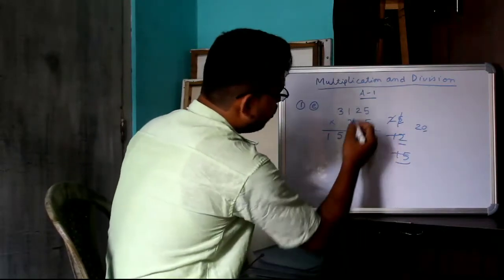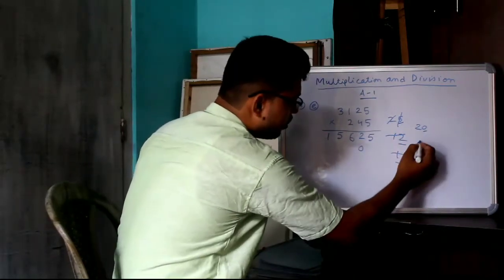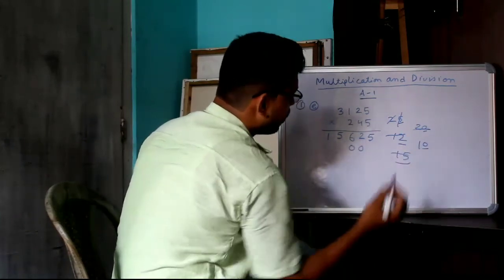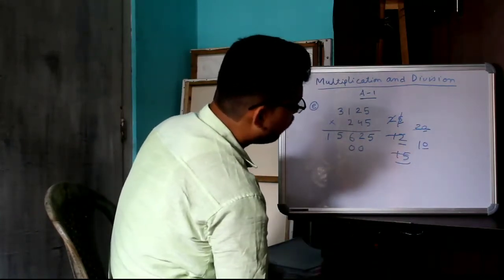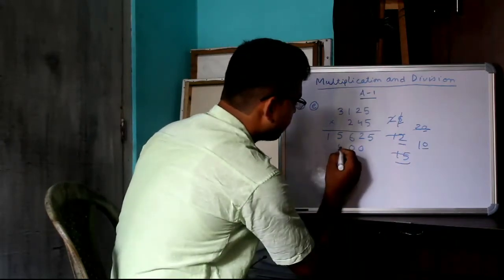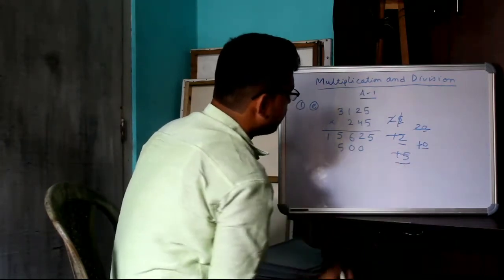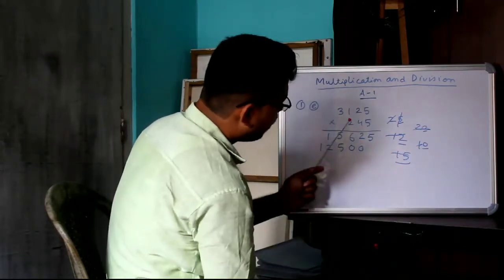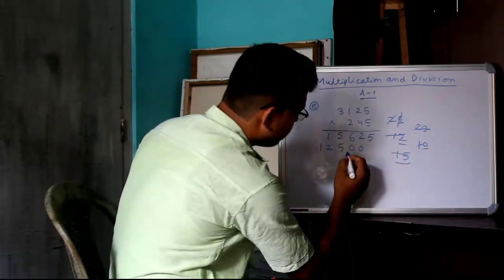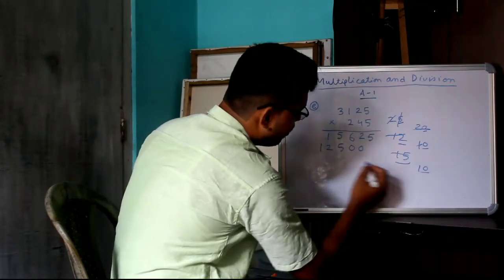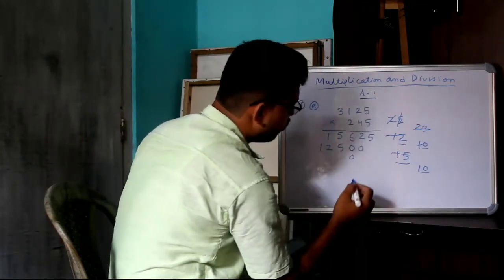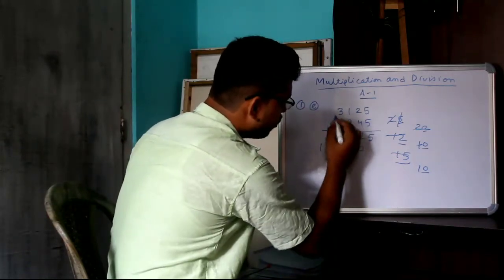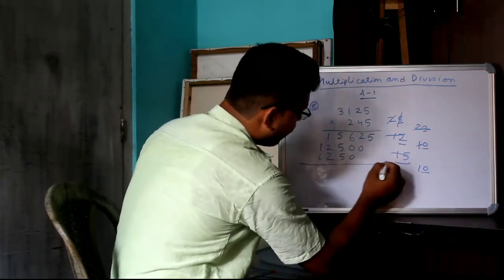Now, the 4. 4 x 2, 8. 8 plus 2, 10. Then, 0 will come. 1 is there. 4 x 1, 4, 4 plus 1, 5. Then, 4 x 3, 12. Now, 2. 2 x 5, 10. 0 will come. 2 x 2, 4, 4 plus 1, 5. 2 x 1, 2. 2 x 3, 6.